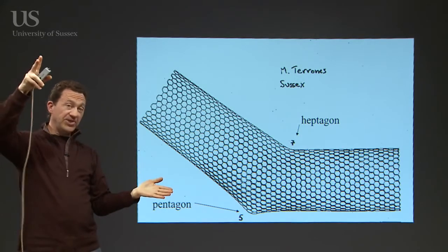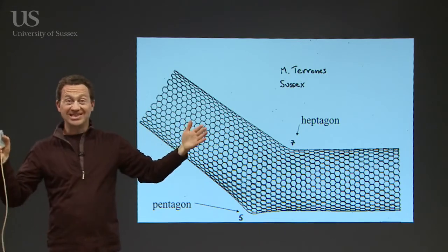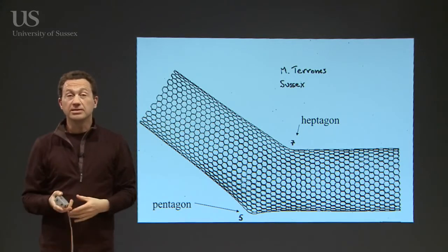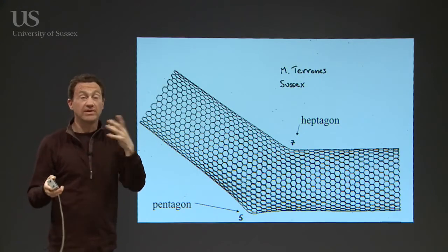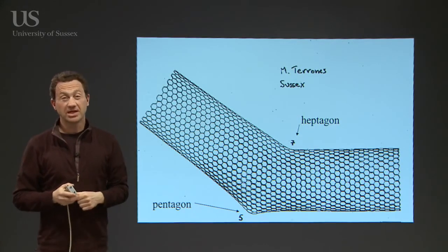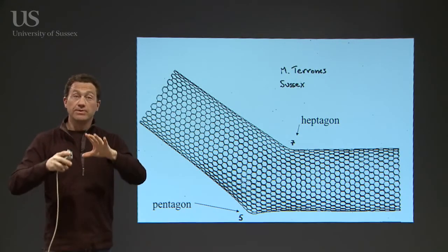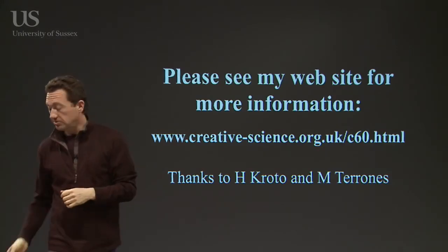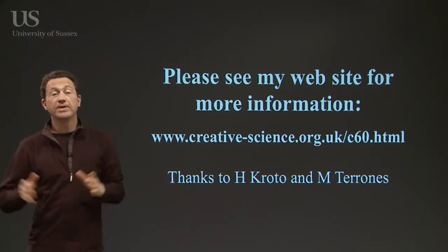They're roughly a thousand times smaller in each direction than current transistors — so in three dimensions they're something like a million or a billion times smaller than current components. So they're going to be very, very interesting structures for the future.